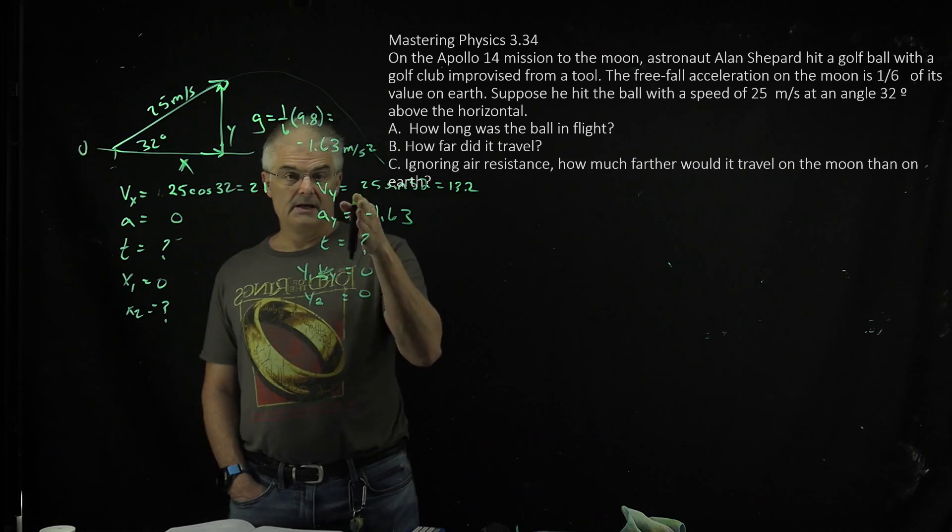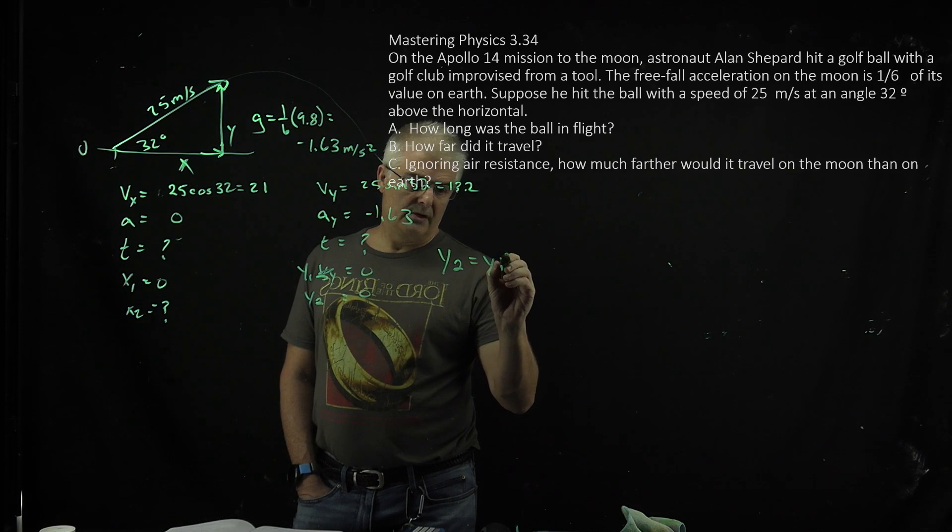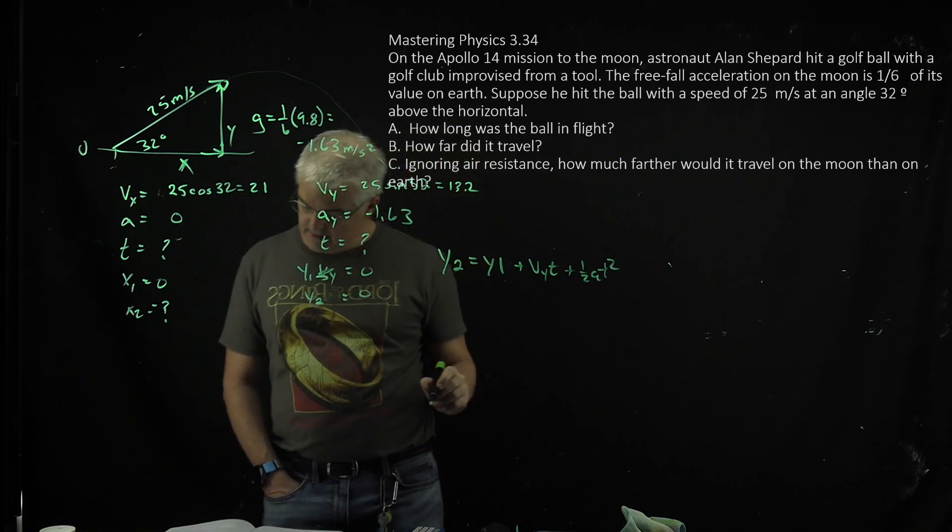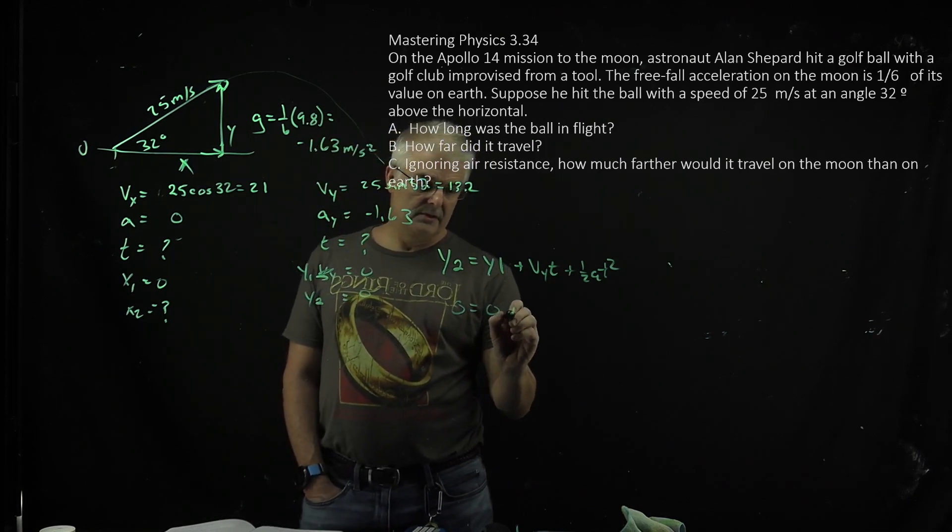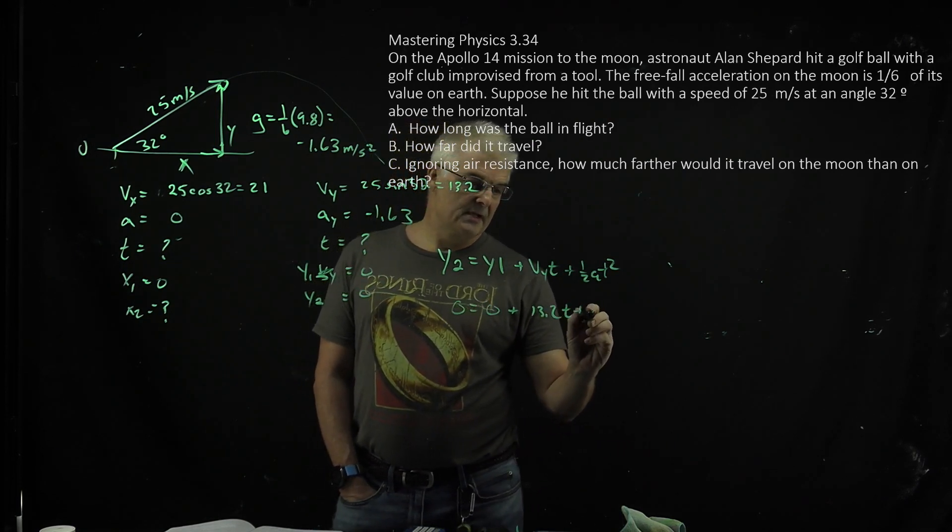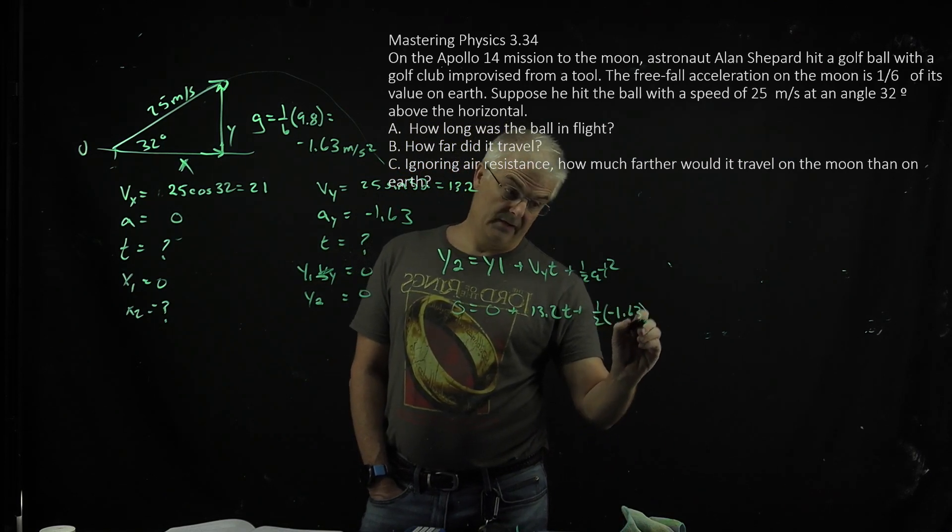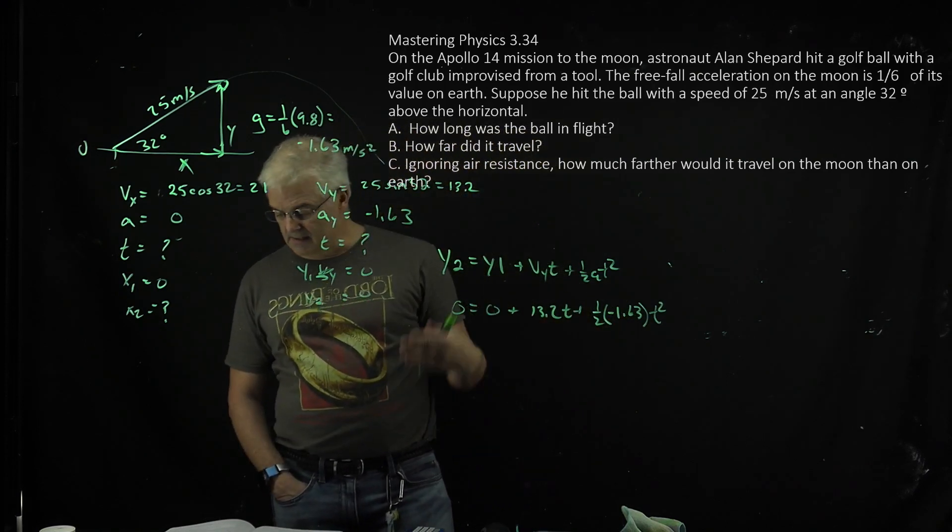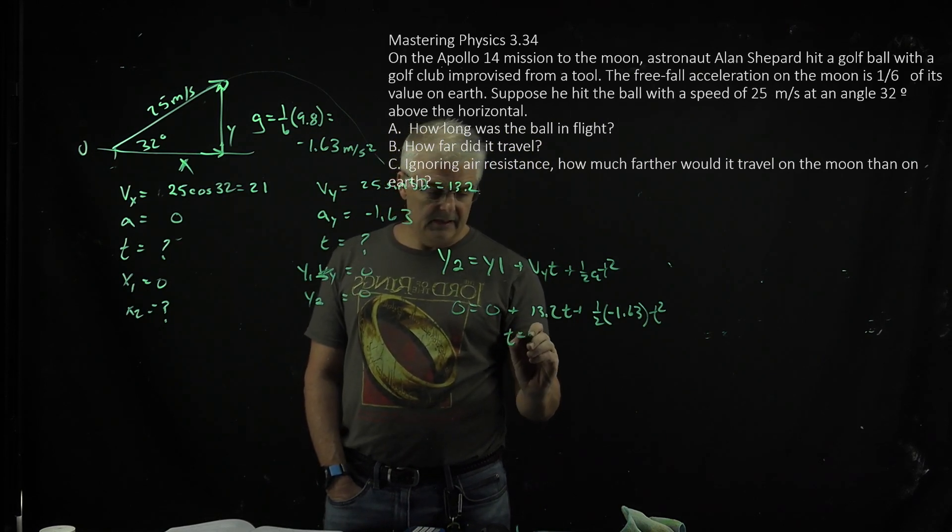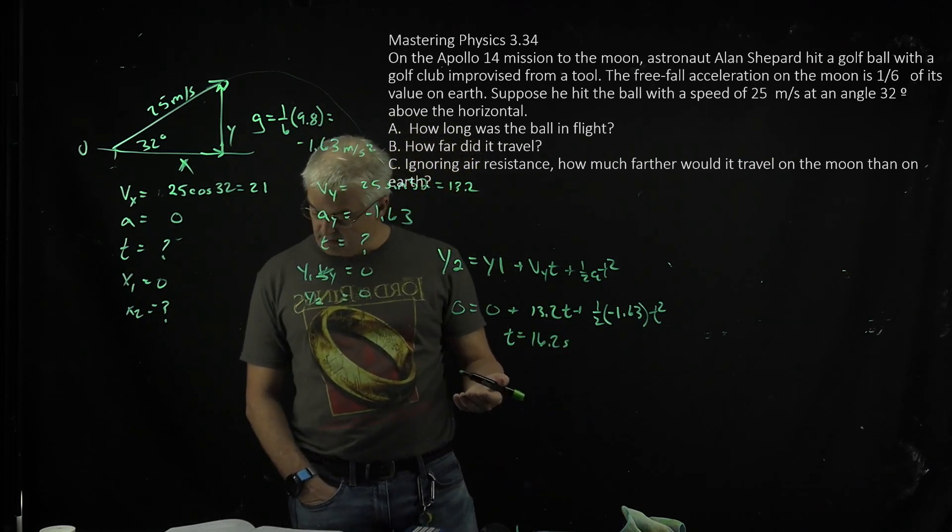You're going to use the y equation. So you're going to say y2 equals y1 plus vyt plus 0.5 at squared. And so this is just 0 equals 0 plus, what was vy? 13.2t plus 0.5 times negative 1.63, t squared. Now you have a t and a t squared, this is a quadratic formula. When you plug it into a quadratic formula calculator, I get t equal to 16.2 seconds. A long time, because gravity is a lot less than on the earth. Typically we'd see a much smaller number on the earth.